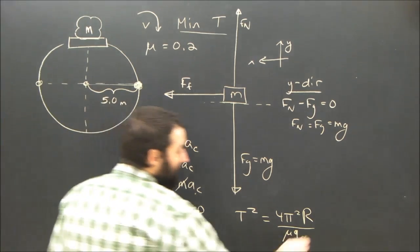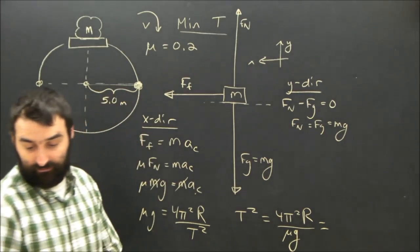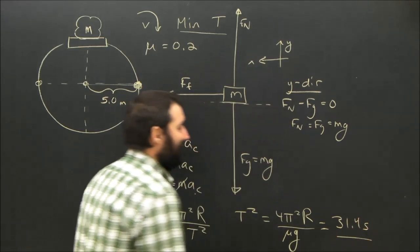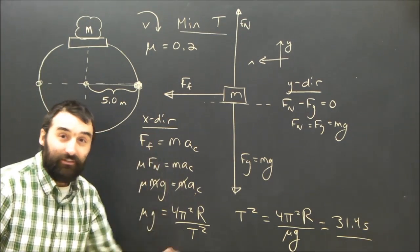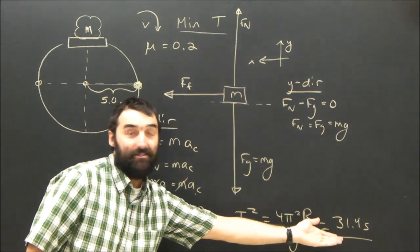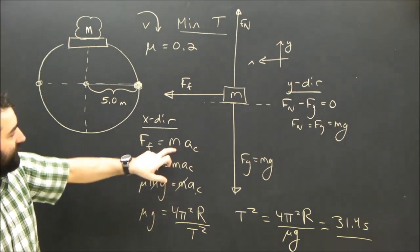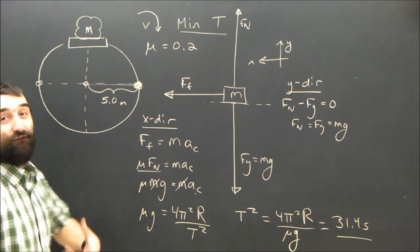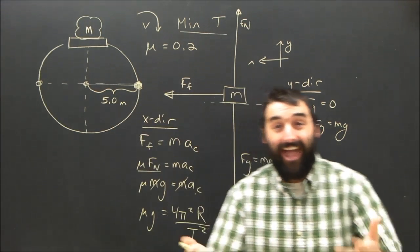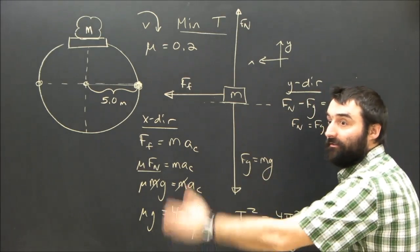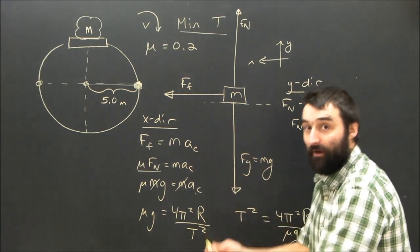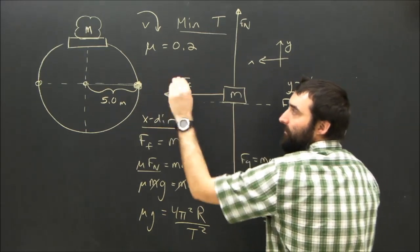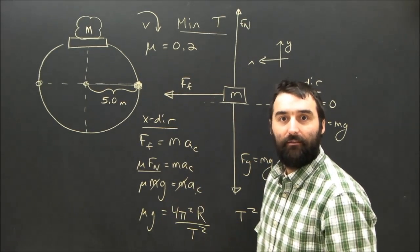And then subbing in, we should get an answer. It looks like it's the root of 900 and some, which turns out to be about 31.4 seconds. If it goes any faster and the time for one rotation becomes less than 31.4, then the centripetal force required to keep this thing going in a circle will be bigger than the frictional force that mu Fn can provide for. If the centripetal force required to make it go in a circle is bigger than the force that friction can provide, it's not going to be able to continue going in a circle. And it's going to appear to slip because the platform is, of course, forced to go in a circle because it's built into the Ferris wheel.